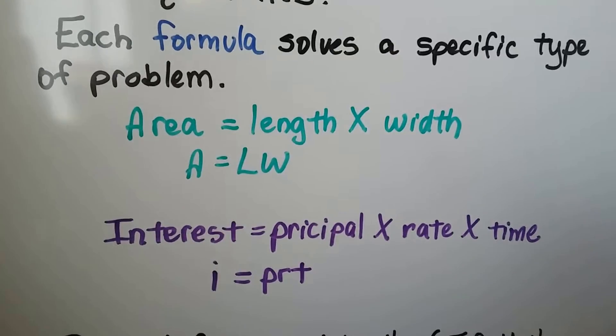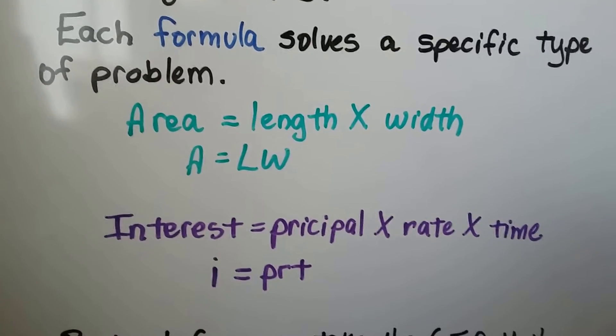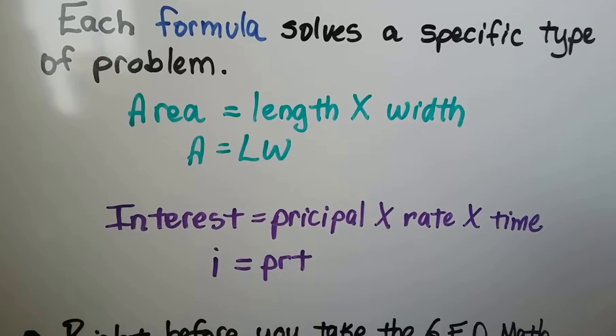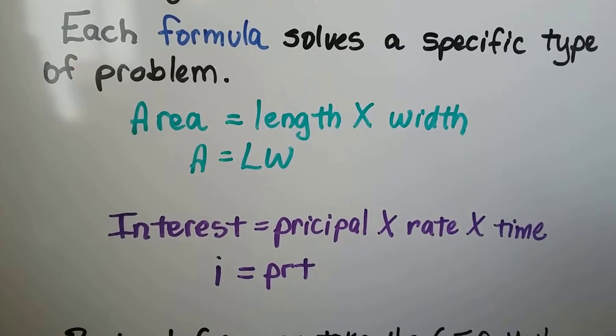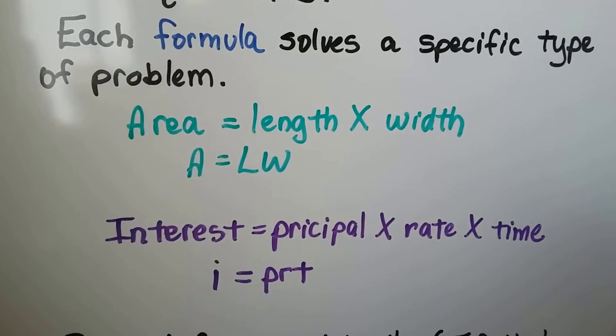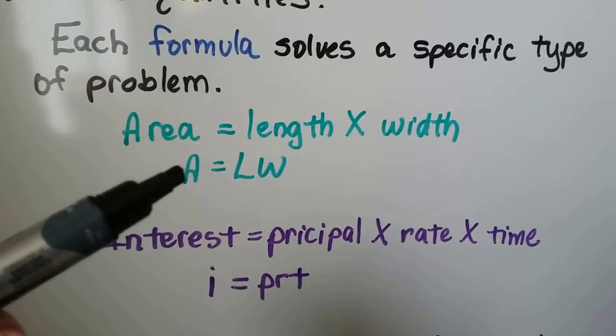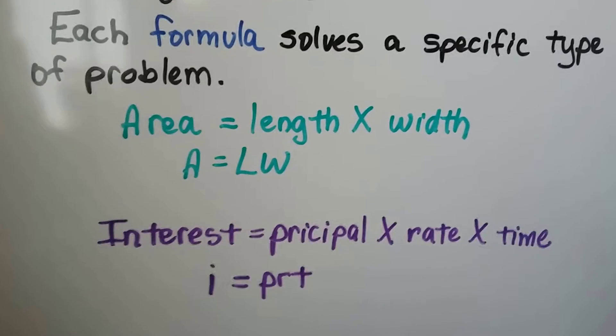If we want to find area, we do length times width. We learned that, right? If we wanted to find some simple interest, we do the principal times the rate times the time. That's I equals PRT. And that specific formula finds the interest. This specific formula finds the area.